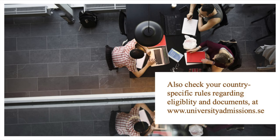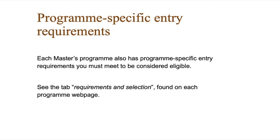Go to universityadmissions.se and check out the country-specific page for the country in which you completed your bachelor's studies. In addition to the general requirements, you must also meet the program-specific entry requirements for the program or programs you want to apply to. Most programs require you to have a bachelor's degree in the related subject, while some programs are more flexible or even open to applicants from any academic background. Check the requirements and selection tab on the program webpage for more details.